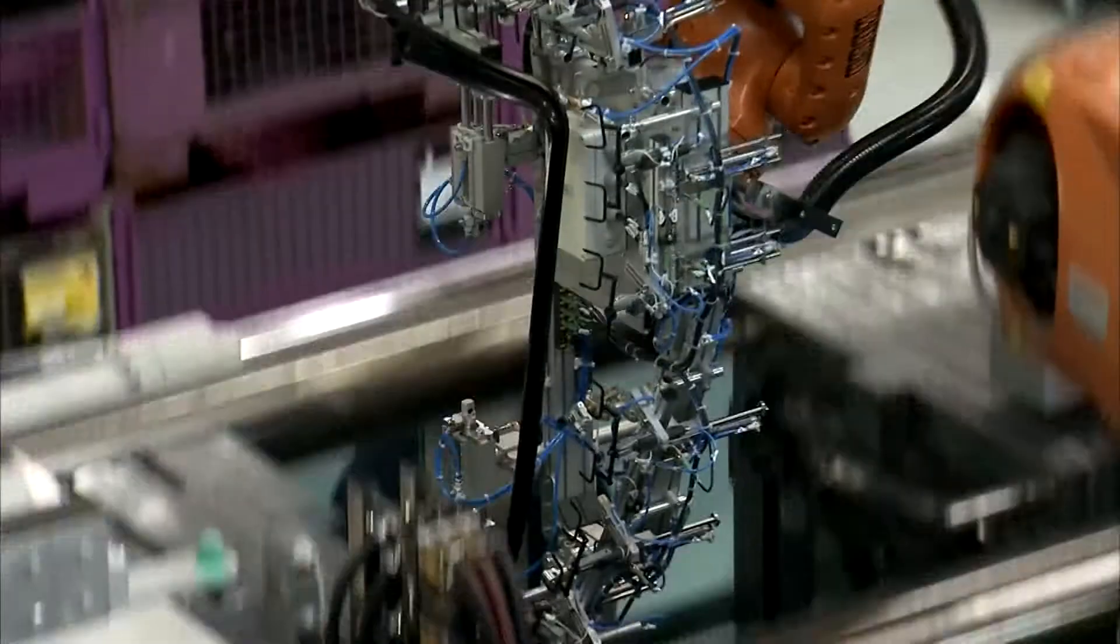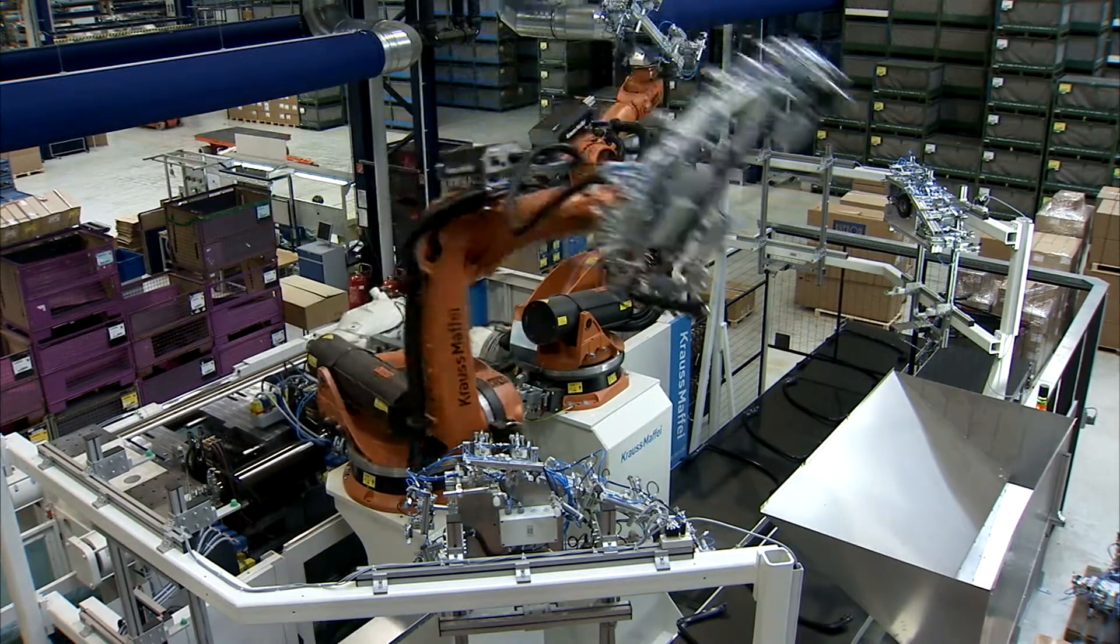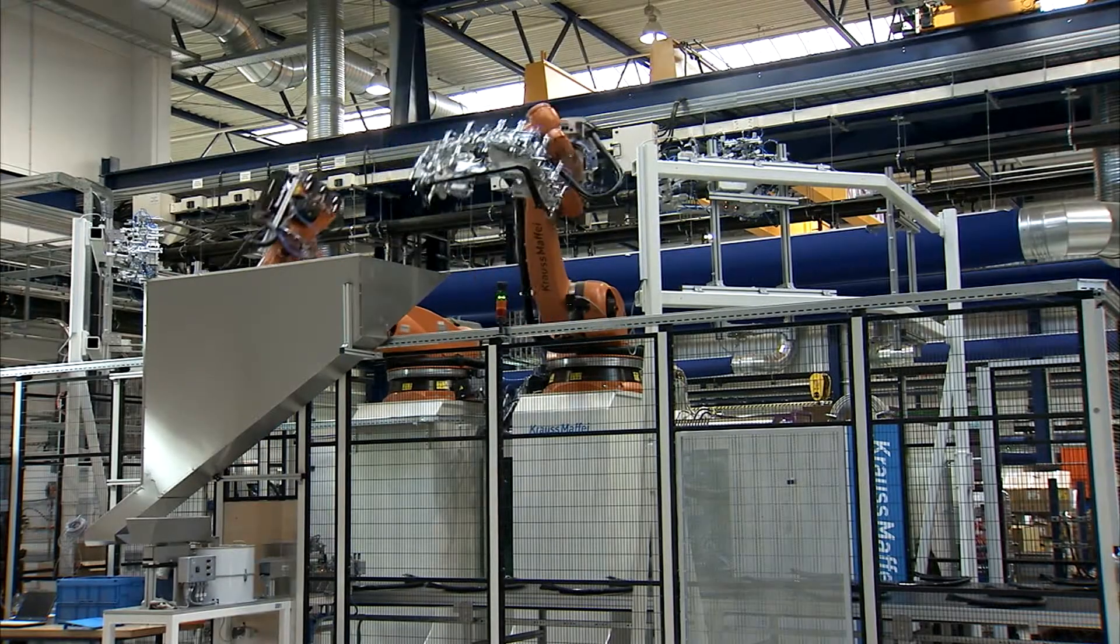For example, to produce window garnishes, stack molds with six axis robots perform fully automated demolding of components.